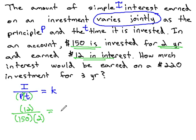We can use this to calculate the constant by multiplying the denominator first. 150 times 2 is 300, and dividing 12 by 300, when we do that, we get 0.04.